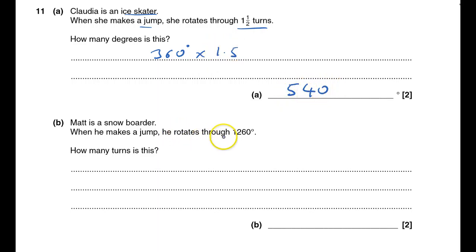Matt is a snowboarder. He rotates through 1260 degrees. How many turns is this? I would just see how many 360s fit into 1260, so 1260 divided by 360, and that gives 3.5. A turn is going to be either a whole number or plus a half turn as well, so that seems a reasonable answer.